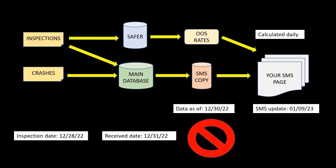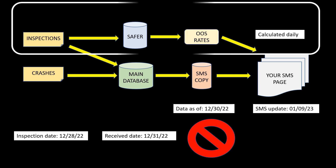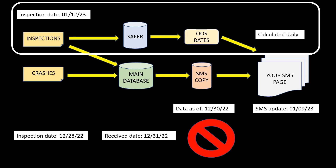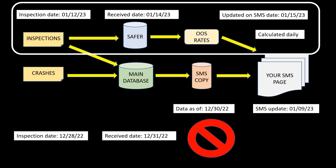In the previous video, the SMS overview — the link for the video is below — I took you through a simplified process flow. I'd like to revisit that part here that affects your out-of-service rates. If you had an inspection on January 12th, and that inspection was received by SAFER on January 14th, that inspection was used in the out-of-service rate calculations, and those calculations were displayed on the SMS page on January 15th. However, the inspection itself did not make it to SMS, and chances are you're not going to see it for another month.